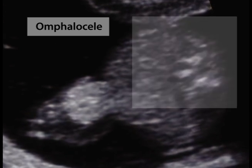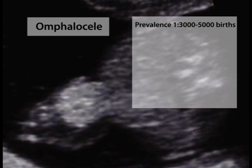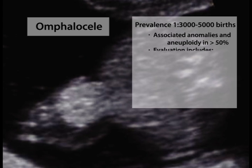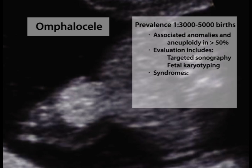Omphalocele complicates approximately 1 in 3,000 to 5,000 births. In more than 50% of cases, omphalocele is associated with other major anomalies or aneuploidy. Thus targeted sonography is indicated and fetal karyotyping should be offered. Omphalocele is also a component of syndromes such as Beckwith-Wiedemann, cloacal extrophy, and pentalogy of Cantrell.